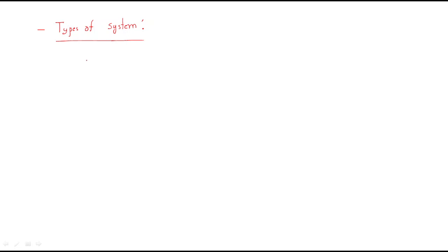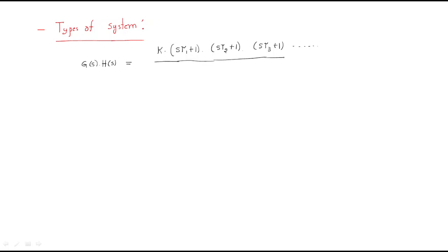The general system transfer function G(s) is written as: G(s) = K · (1 + s·τ₁)(1 + s·τ₂)(1 + s·τ₃) / [s^n · (1 + s·τₐ)(1 + s·τ_b)(1 + s·τ_c)]. Here H(s), the feedback gain, is taken as unity. K is the DC gain — meaning when frequency ω becomes zero, all the time-constant terms become one and only K remains.